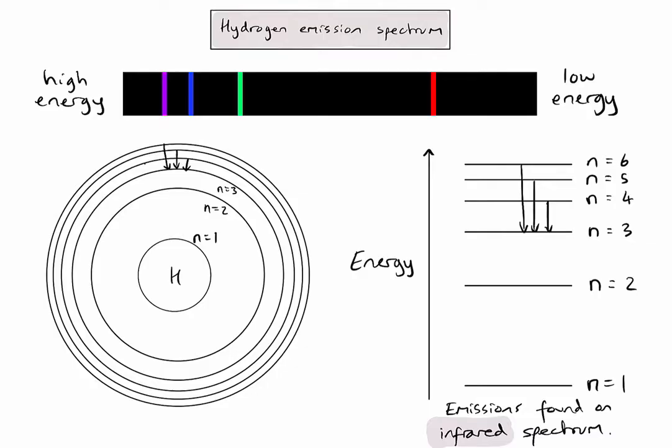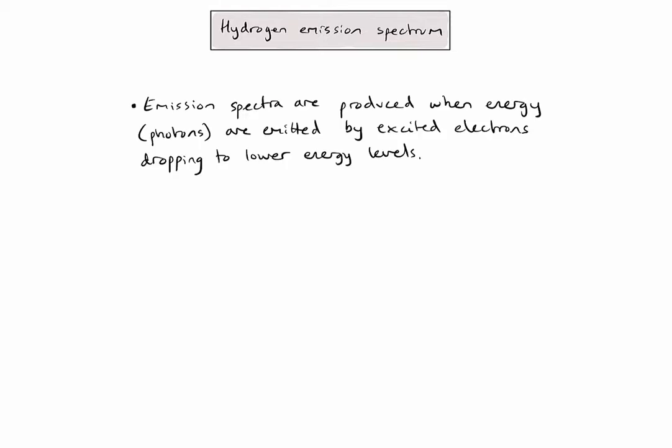Let's summarize the key points from this video. Firstly, emission spectra are produced when energy or photons are emitted by excited electrons dropping to lower energy levels. Secondly, the hydrogen emission spectrum suggests that electrons are found in discrete energy levels that converge at higher energies.